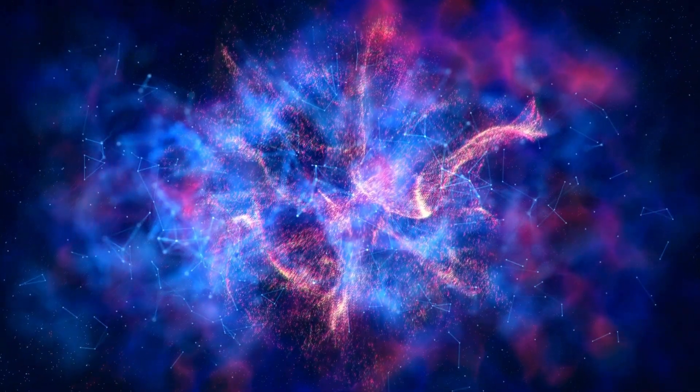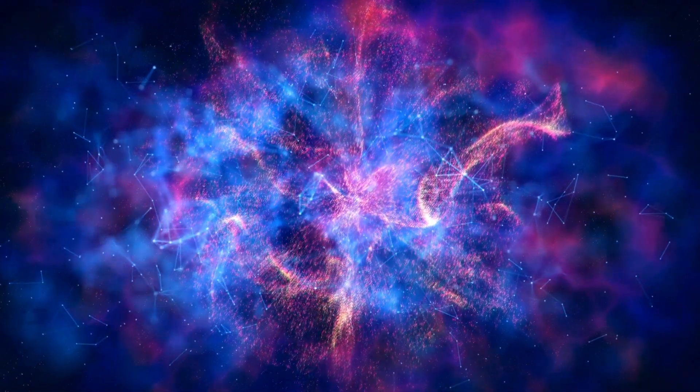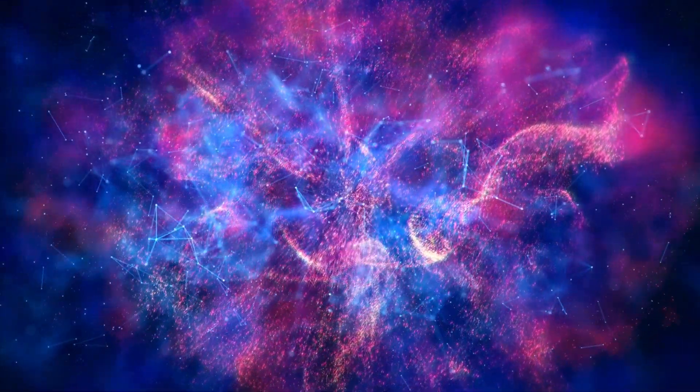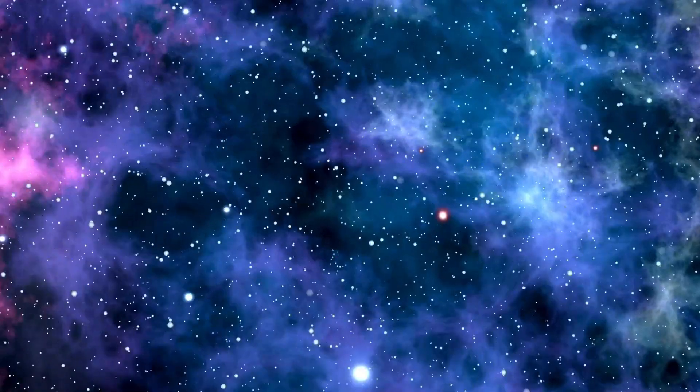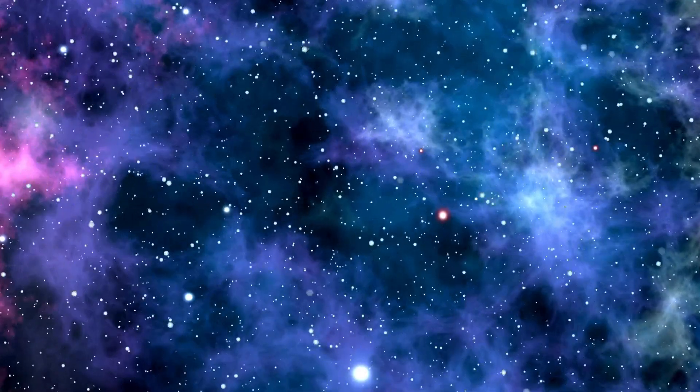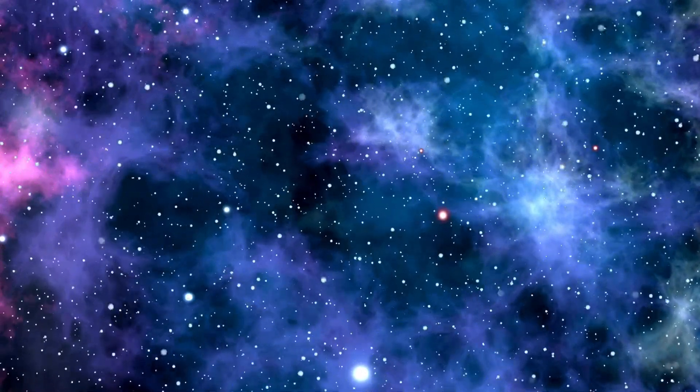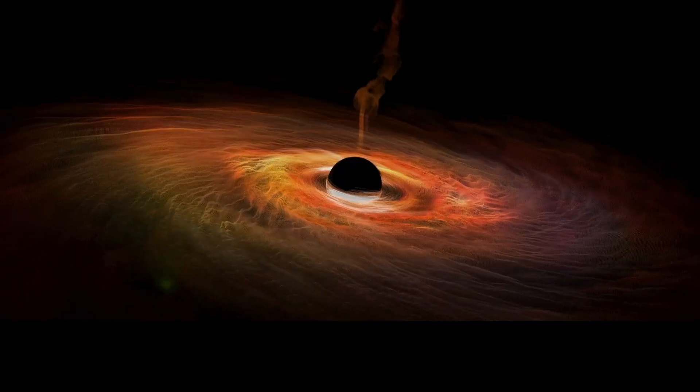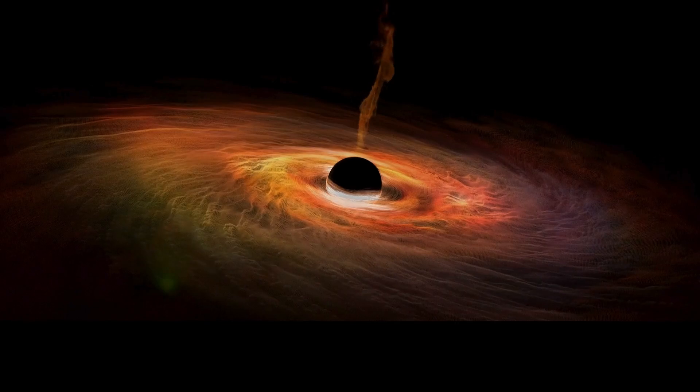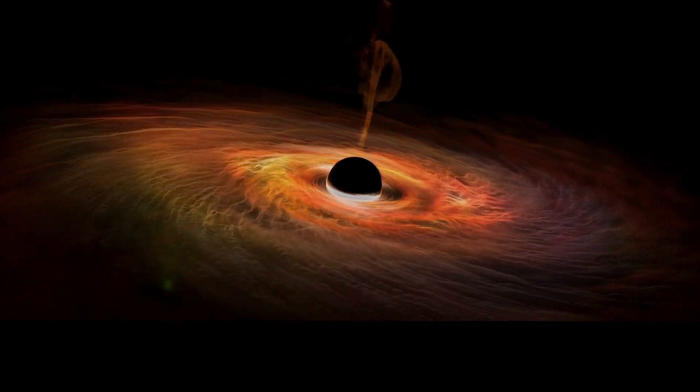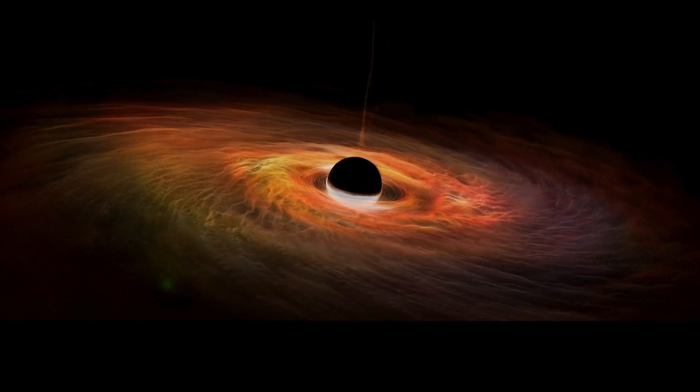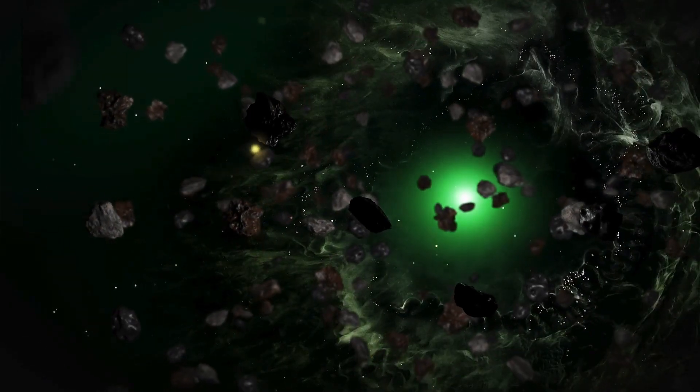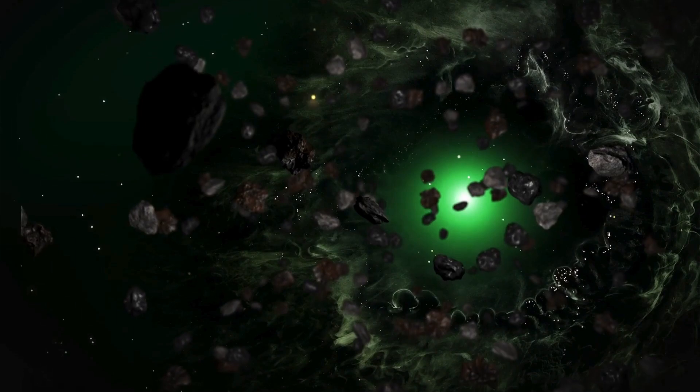Betelgeuse isn't the only red supergiant in our galaxy. Others like Eta Carinae might burst into the sky before it does. Statistically, our Milky Way should witness a supernova roughly every 50 years, yet we haven't seen one in the last 400 years. However, we've observed remnants of past explosions, indicating that we're overdue for an extraordinary cosmic event. It's just a matter of time before the next star puts on its dazzling show for the universe to witness.